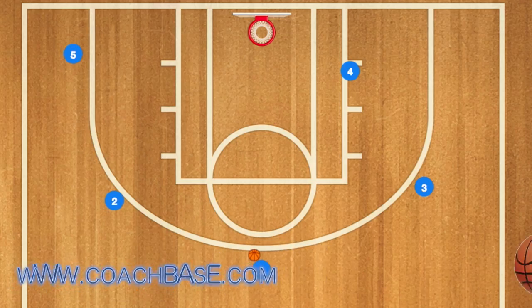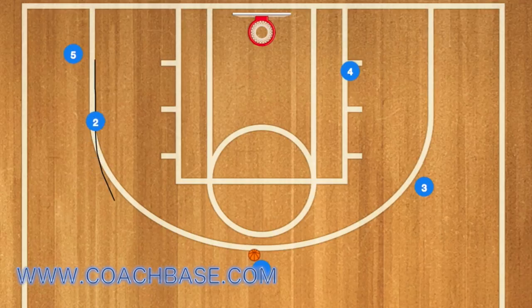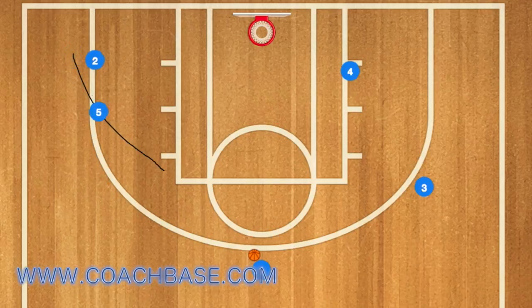Many people have asked: what is a pin down in basketball? Basically, player two is screening for five — setting a screen for a player who's down on the baseline — and he's pinning his defensive player. Player five would come up to the three-point line or to the elbow, hopefully be open to receive a pass.